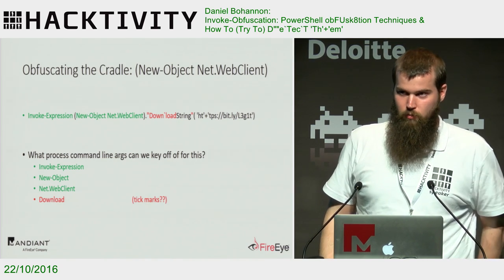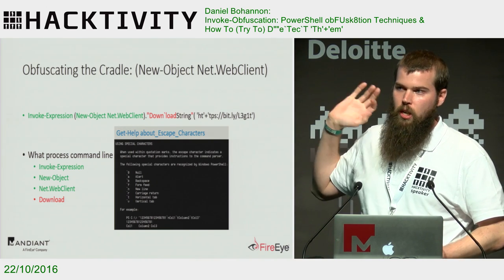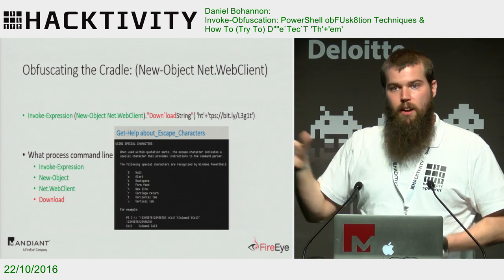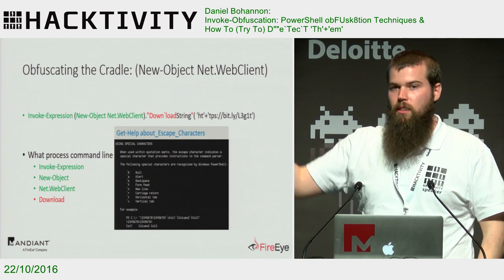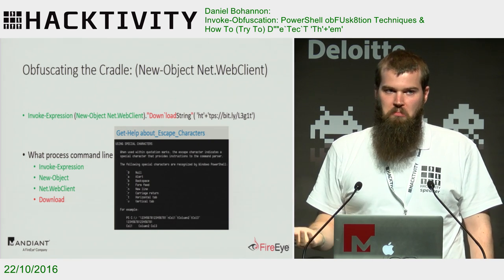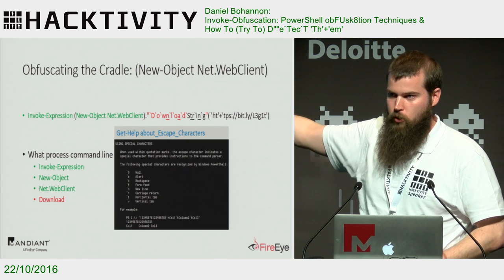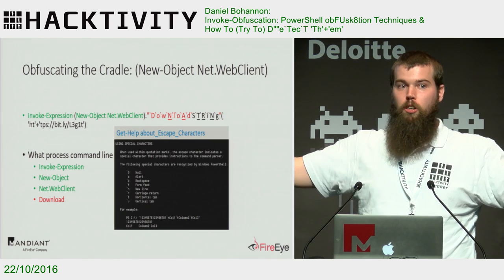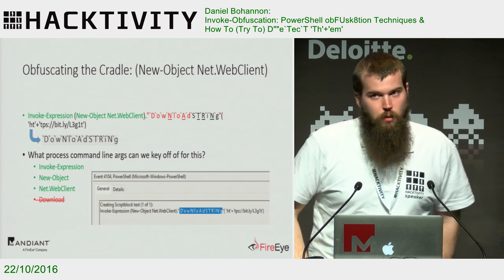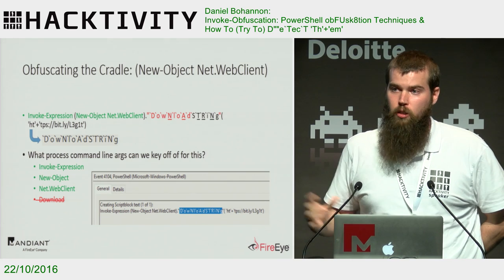I also found you can put double quotes around a member argument and insert a tick mark before a character — for example, before the 'l' in 'downloadstring' — and this actually works. The tick mark is the escape character in PowerShell; when you put a tick in front of something without special meaning, it's totally fine and runs. As a defender, we can put ticks in front of all non-special characters. This matters because these tick marks persist in the command line arguments as well as PowerShell script block logging.